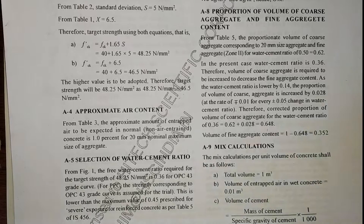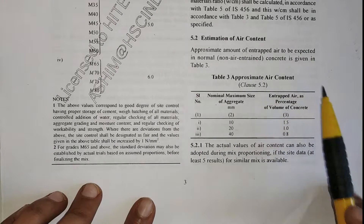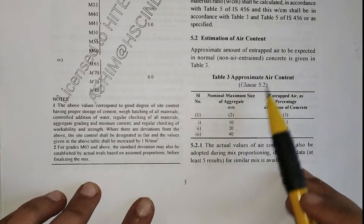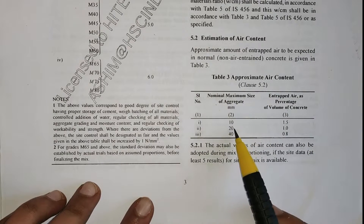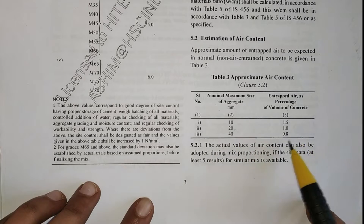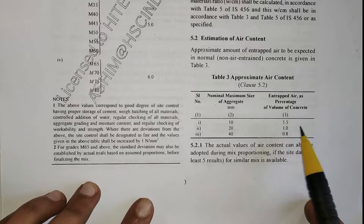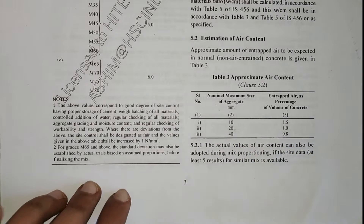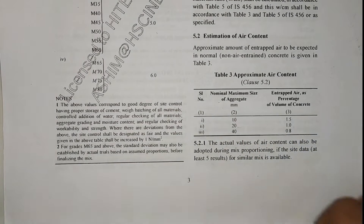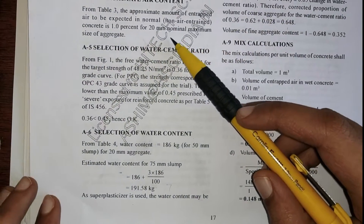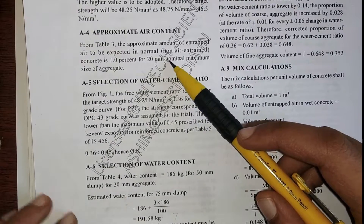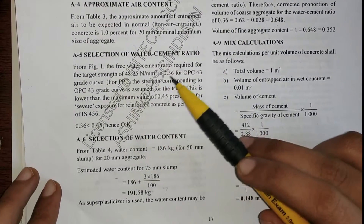Next is approximate air content. Going to Table 3, for a nominal maximum aggregate size of 20 mm, the entrapped air percentage is 1%.